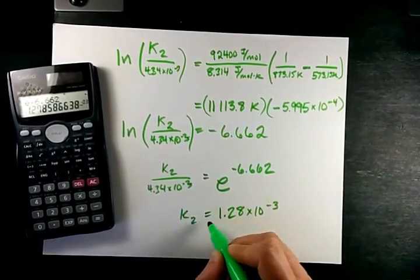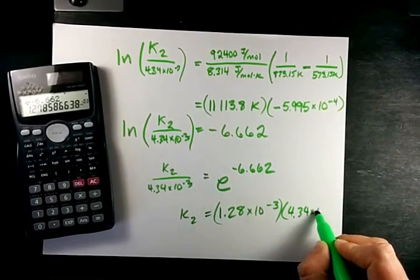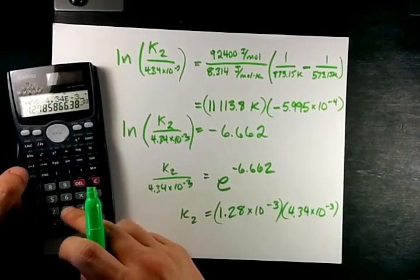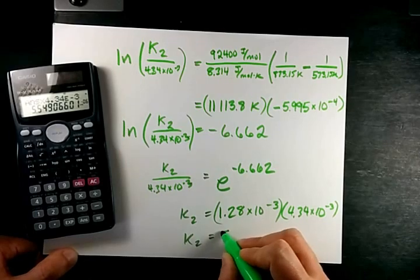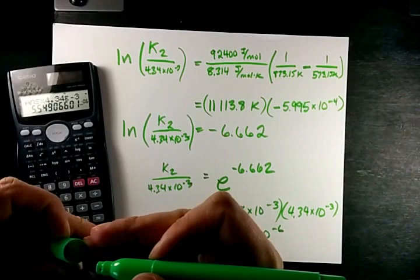And in order to solve for K2 on this side, I need to multiply it by the original Kp that we were given. That's times 4.34 times 10 to the negative 3, which gives me a new equilibrium constant of 5.55 times 10 to the negative 6.